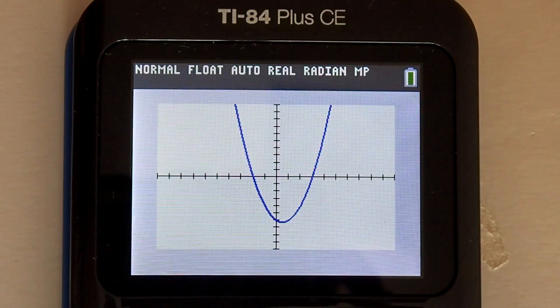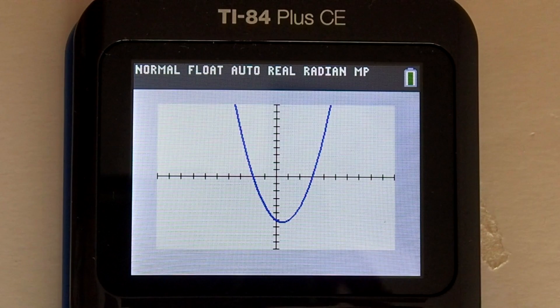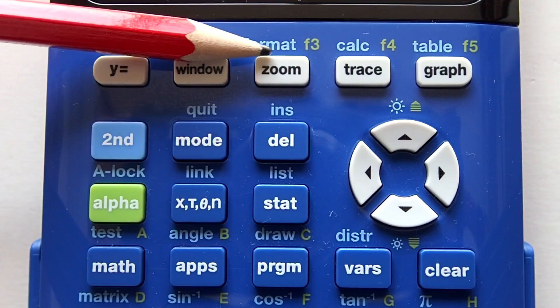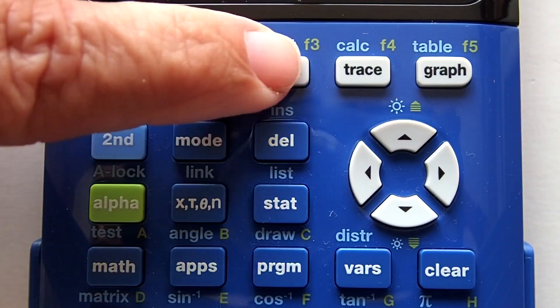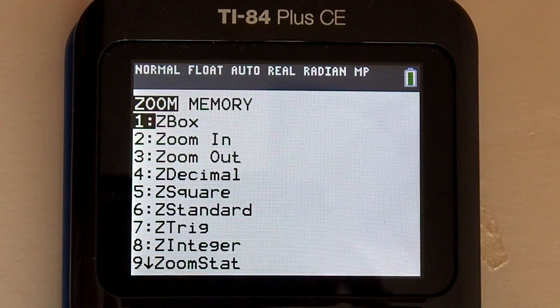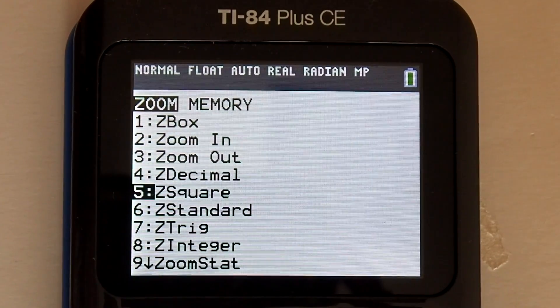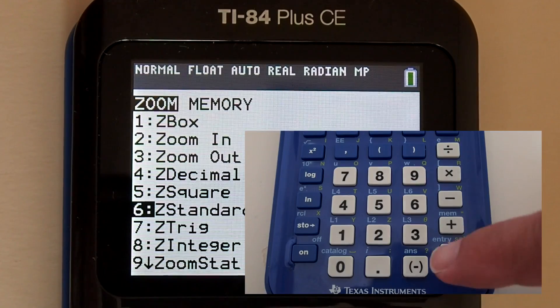If you don't get this graph, you may need to reset your graphing window to the standard view. To reset your graphing window, press the zoom button here on top. Go down to number 6, z standard, which stands for zoom standard. Press the enter key.